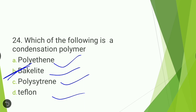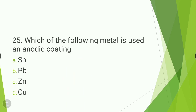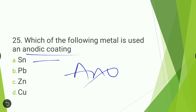Next question: which of the following metal is used in anodic coating — lead, zinc, or copper? The answer is zinc. Zinc is used in anodic coating. Thank you.